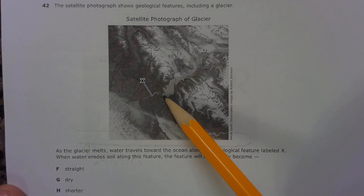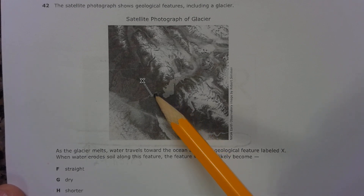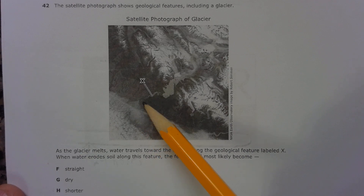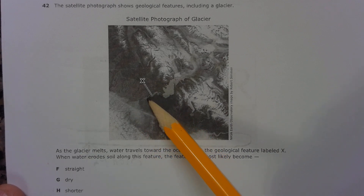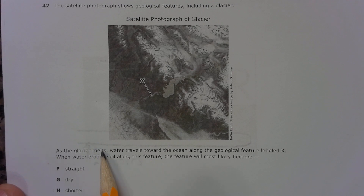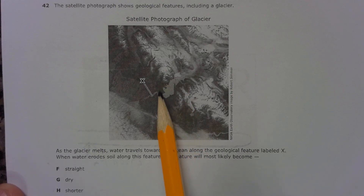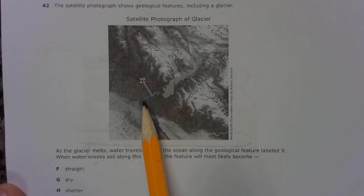It's frozen water, and as it melts, it forms liquid water, which runs down the side of the mountain into the ocean and causes this river to form here. So this says, as the glacier melts, water travels towards the ocean along the geologic feature labeled X. So it's water from this melting glacier right here that flows down the mountain where X is.